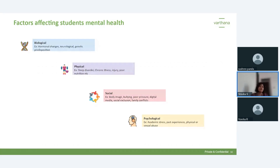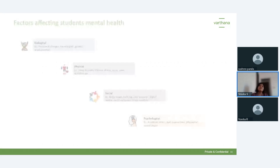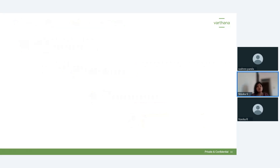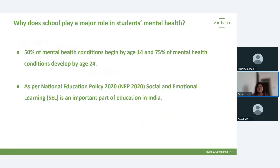50% of mental health conditions begin by age 14, and 75% develop by age 24. Most people show some form of mental health issue between ages 14 and 24 — these students are in their building years and are at school. They need support and need to learn mechanisms to deal with their mental health, which is why it's important for schools to be equipped for this.